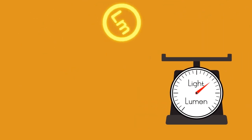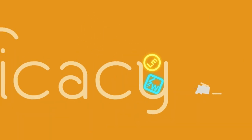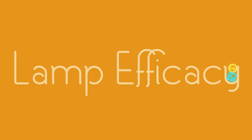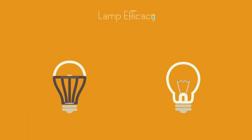One lumen is approximately equal to the amount of light emitted by one candle. Lumens per watt is also known as lamp efficacy. Efficacy allows us to objectively compare different lamps.